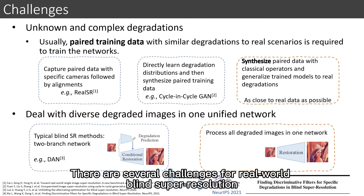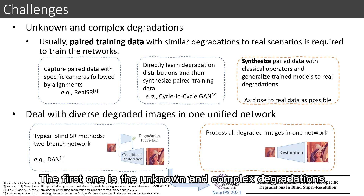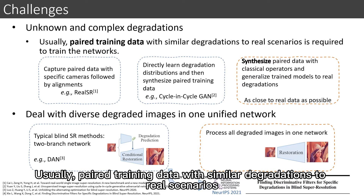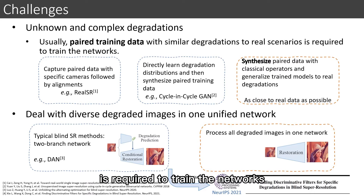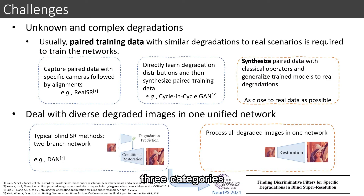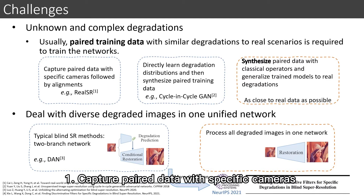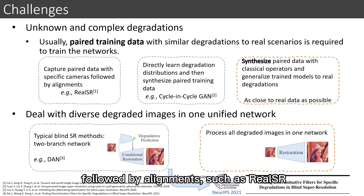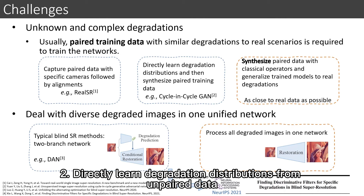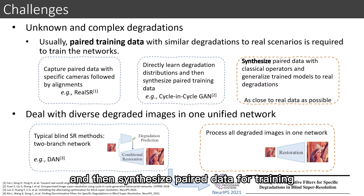There are several challenges for real-world blind super-resolution. The first is unknown and complex degradations. Usually, paired training data with similar degradations to real scenarios is required to train the networks. Previous work can be roughly classified into three categories: (1) capturing paired data with specific cameras followed by alignments, such as Real-ESR; (2) directly learning degradation distributions from unpaired data and then synthesizing paired data for training, such as Cycle-in-Cycle GAN.